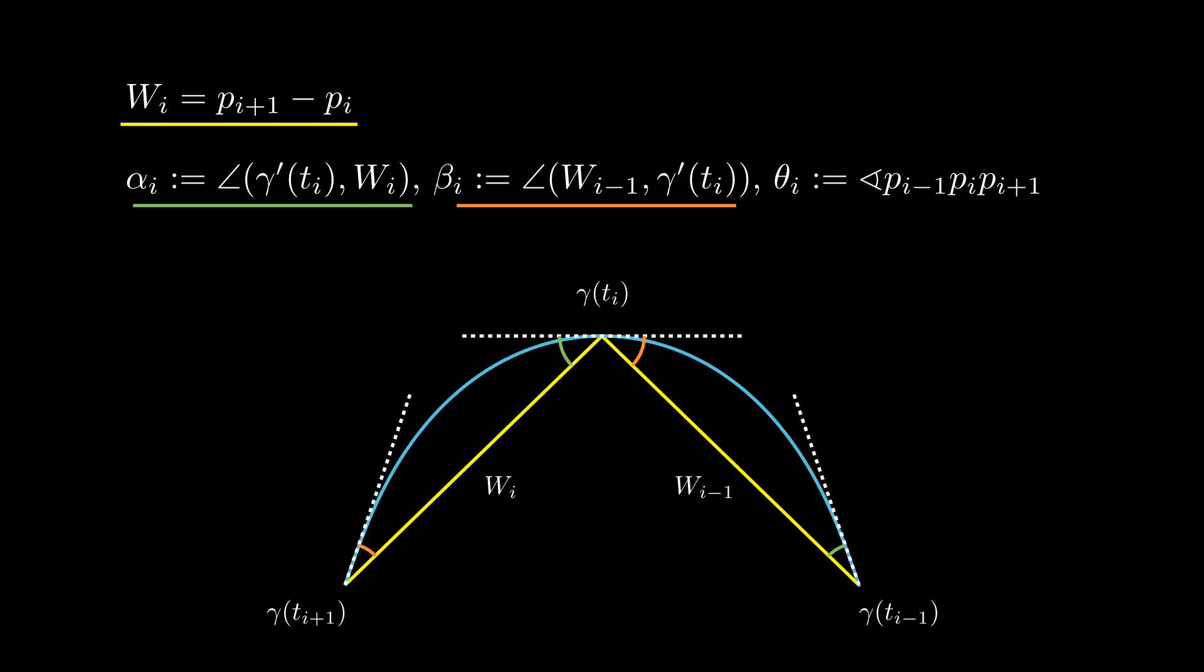Similarly, β_i is the angle going from w_{i-1} to γ'(t_i), and θ be the interior angle of the polygon at p_i. Note that α and β are signed angles that can potentially be negative from minus π to π, while θ is always a non-negative number between 0 and 2π.